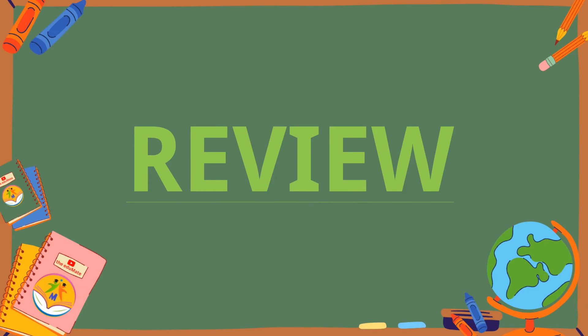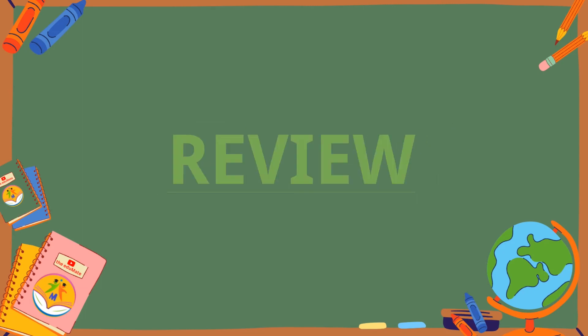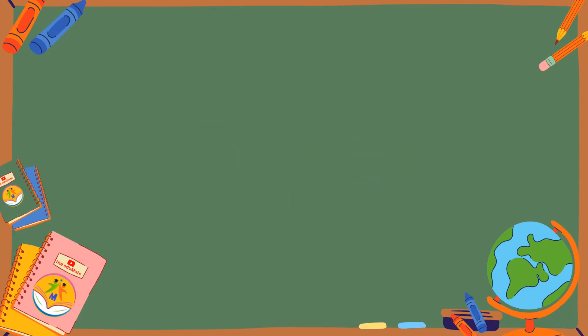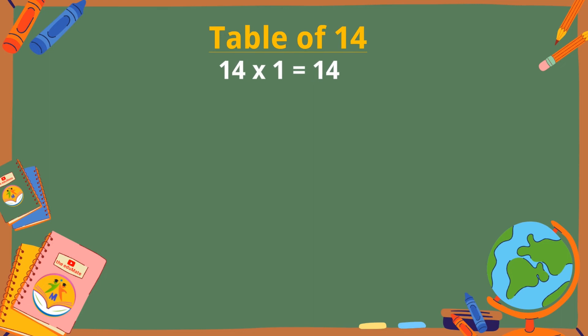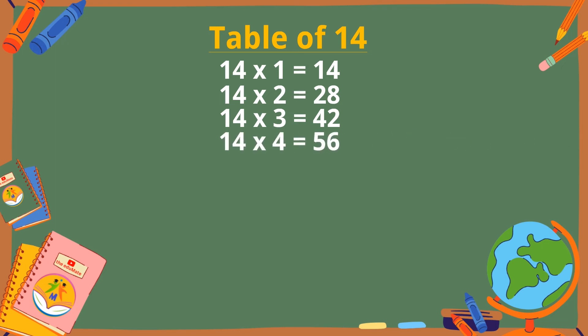Let's revise the table of 14. 14 ones are 14. 14 twos are 28. 14 threes are 42. 14 fours are 56. 14 fives are 70.